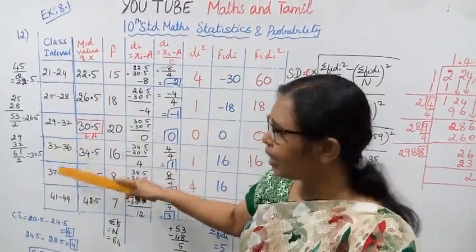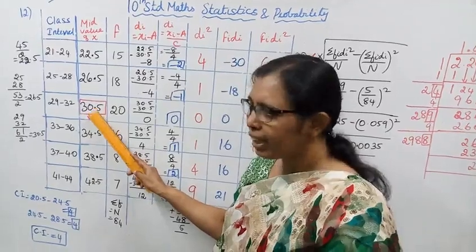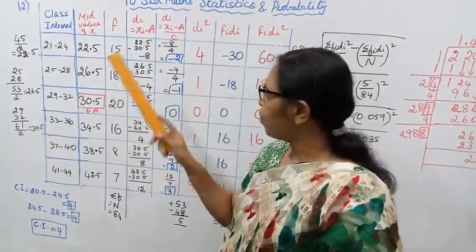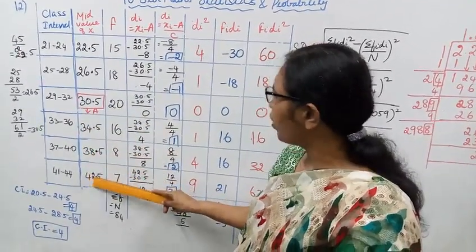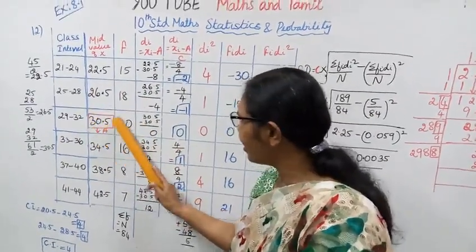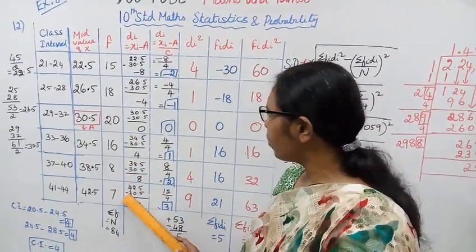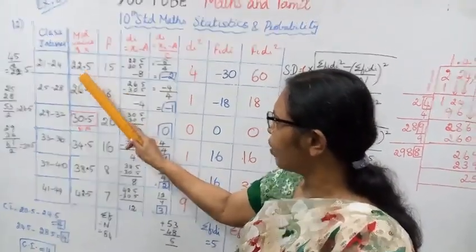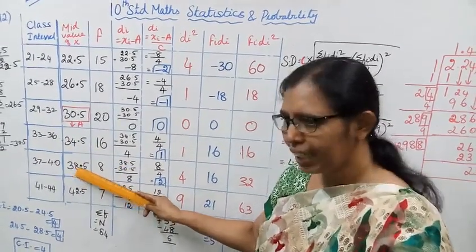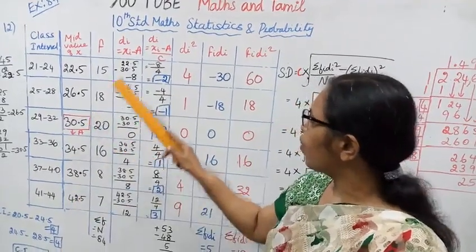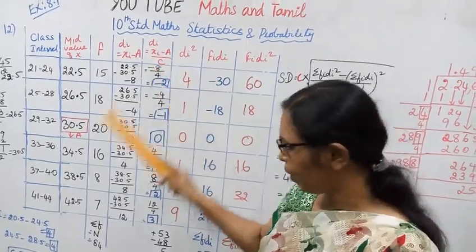The mid values xi are: 22.5, 26.5, 30.5, 34.5, 38.5, 42.5. We choose assumed mean a = 30.5. Now da = xi minus a by c, where the class interval c = 4. Subtracting 30.5 from each xi: 22.5 - 30.5 = -8, divided by 4 gives -2. 26.5 - 30.5 = -4, divided by 4 gives -1. 30.5 - 30.5 = 0. 34.5 - 30.5 = 4, divided by 4 gives 1. 38.5 - 30.5 = 8, divided by 4 gives 2. 42.5 - 30.5 = 12, divided by 4 gives 3.